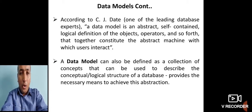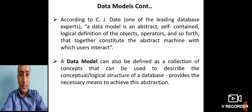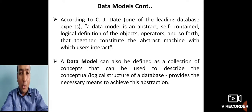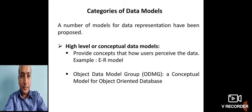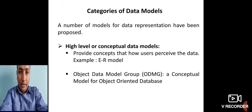A data model can also be defined as a collection of concepts that can be used to describe the conceptual or logical structure of a database. It also provides the necessary means to achieve abstraction in the database application, defining how relationships and structures are organized. The cumulative collection of these concepts is what we call a data model.